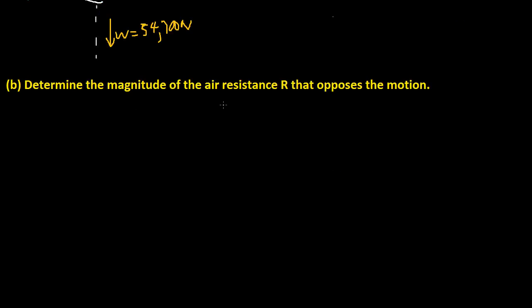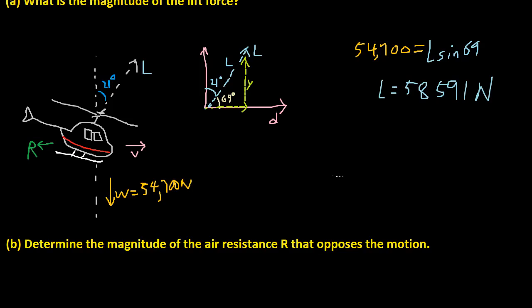Let's go to B: determine the magnitude of the air resistance R that opposes the motion. Let's figure out how many newtons are used to go forward. That's easy because we already know L, so we can just calculate the x denoted by this darker green color.